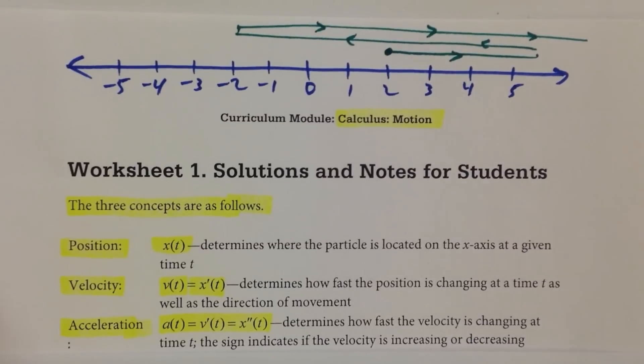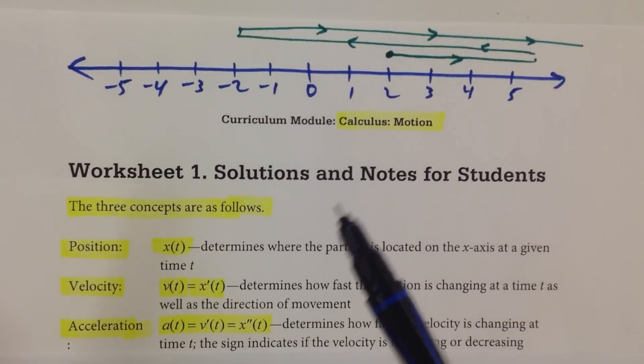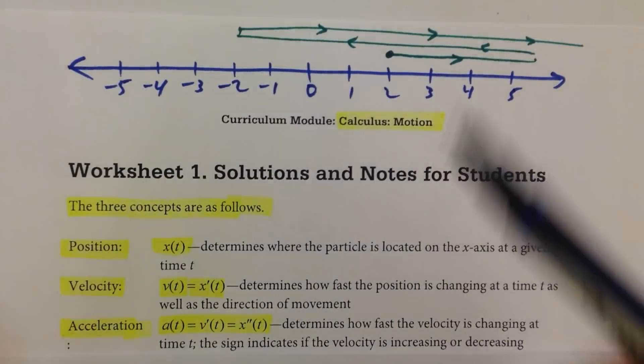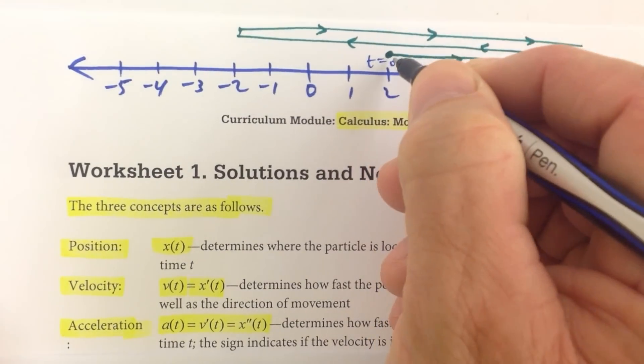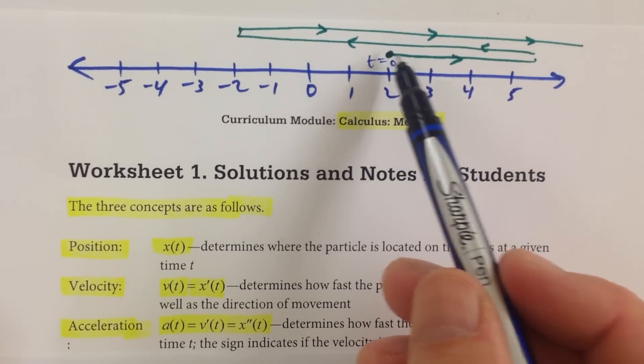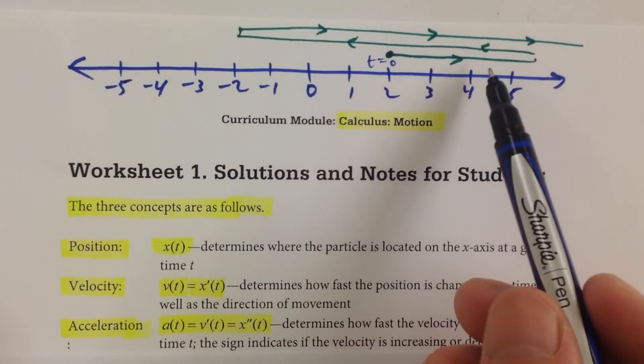But keep in mind that motion along the x-axis, we always have three things going on at any time. We have the position of the object, and let's say in the beginning, at t equals 0, this particular object was at position 2. Well, that's fine. It can move to the right, it can move to the left, but it's going to be moving back and forth along the x-axis.